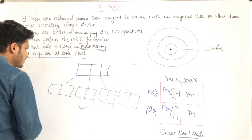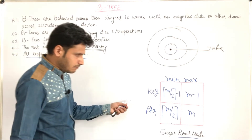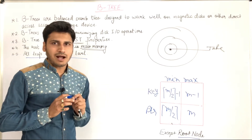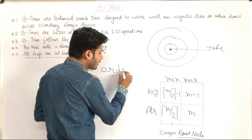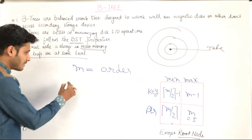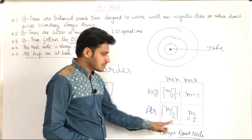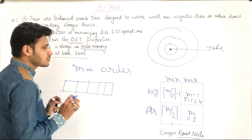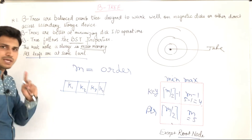To understand B-tree insertion and deletion, we require one table. The question is: how many elements can be in one node? We use M, which represents the order of the B-tree. For example, if M equals 5, it means in one node the maximum number of pointers (PTR) is 5, and the maximum number of key elements is M minus 1, which is 5 minus 1 equals 4. So I can store 4 key elements in one node.